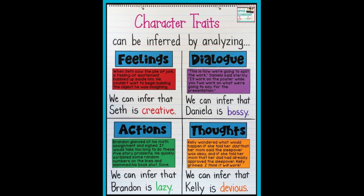We can infer character traits by looking at someone's actions. I'm reading out of the green box now. 'Brandon glanced at his math assignment and sighed. It would take too long to do these five story problems. He quickly scribbled some random numbers on the line and slammed his book shut. Done.' We can infer that Brandon is lazy. He decided it would take too long, scribbled random numbers, slammed his book shut — he didn't think about them or use strategies. He just wanted to get it done.